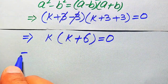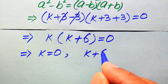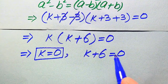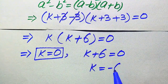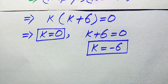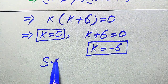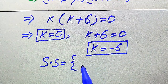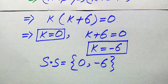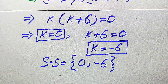We divide this into two cases. The first case gives k = 0, and the second case k + 6 = 0 gives k = -6. Again we get the same two values. Since we already verified both values in the first method, the solution set is {0, -6}. This is our final answer. Thank you so much for watching this video — please subscribe to my channel for more exciting videos.